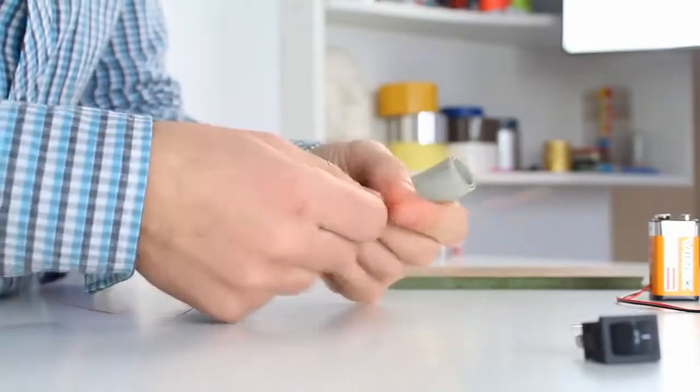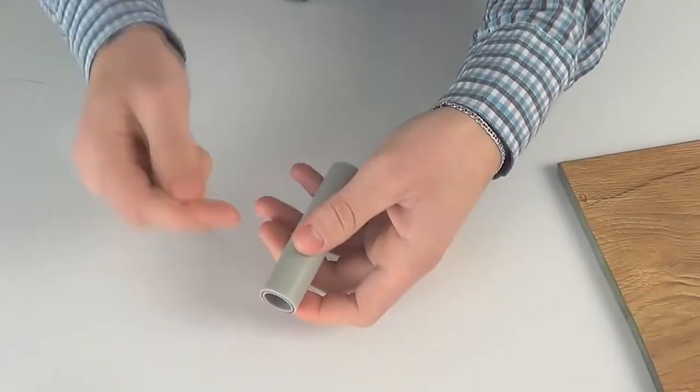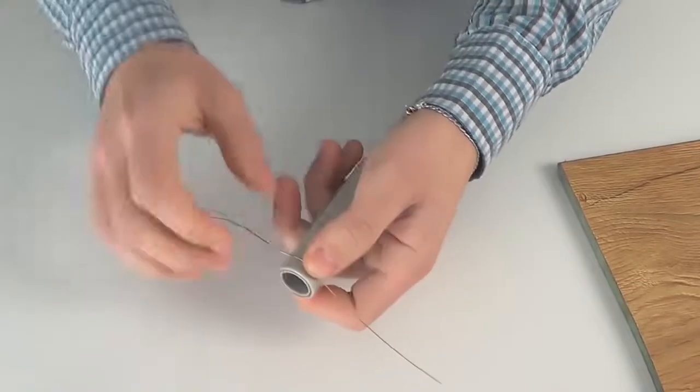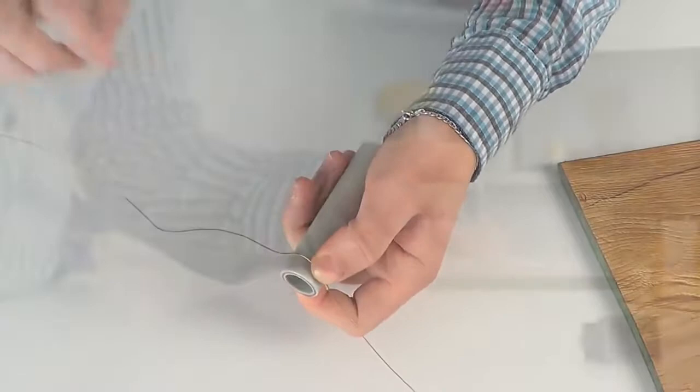First of all let's make our coil. We have to wind the copper wire around the PVC pipe but leave half of a centimeter at the ends. After winding the wire fixate the second end with some tape to prevent it from unspooling.